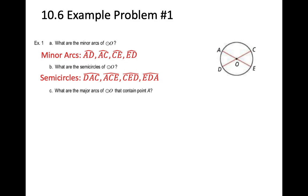What are the major arcs that contain point A? There are four of them: starting at D, going through A and C to E — that's arc DAE; starting at A going clockwise through C, E, and D; starting at C going clockwise through E, D, and A; and starting at E going clockwise through D and A to C. All four are major arcs bigger than half the circle.